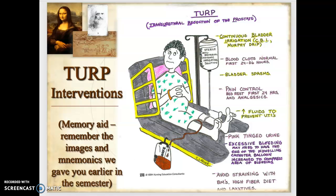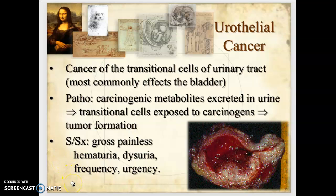Urothelial cancer is a cancer of the transitional cells lining the urinary tract or bladder. The pathophysiology involves carcinogens from cigarette smoking traveling down into the urinary tract, coming into contact with the transitional cells of the bladder lining, damaging their DNA, and causing tumor formation. Signs and symptoms include gross, painless hematuria — visible blood but no pain — along with dysuria, frequency, and urgency.